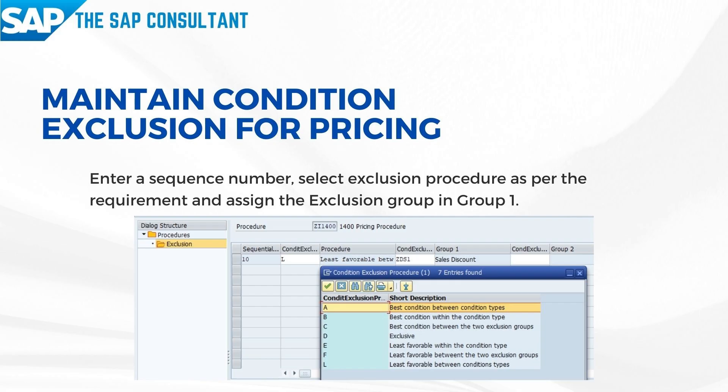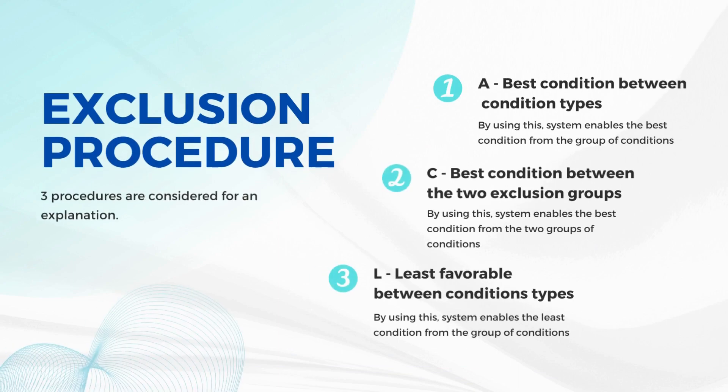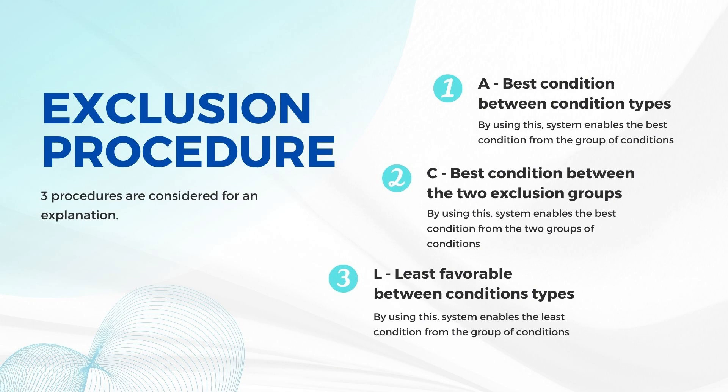There are different exclusion procedures. For your understanding, let's discuss about three condition exclusion procedures. Procedure A — Best Conditions Between Condition Types. By using this, the system enables the best condition from the group of conditions. As per the above business example, we can activate the 4% discount on sale of wardrobe.